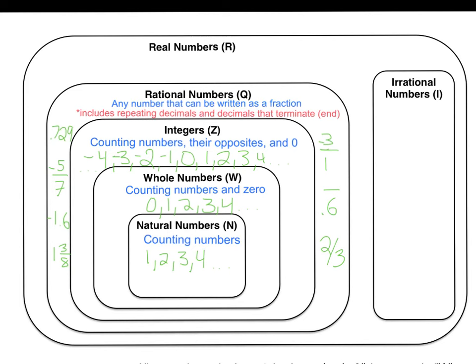Now a final thought about rational numbers. When we say it can be written as a fraction, we mean a fraction where the denominator is not zero.